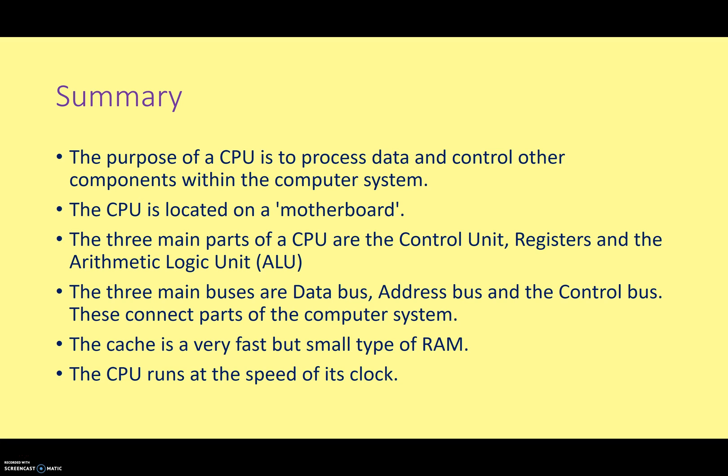All right, let's go through a very brief summary of that. The purpose of the CPU is to process data and control other components within the computer system. The CPU is located on the motherboard. The three main parts of the CPU are the control unit, registers, and the arithmetic logic unit, which we've all encountered in the previous lesson. The three main buses we have to worry about are the data bus, the address bus...